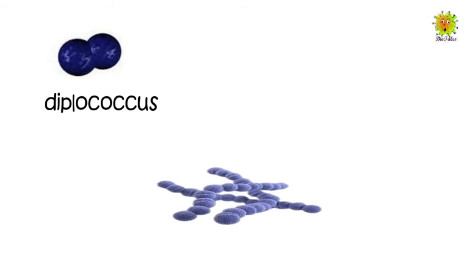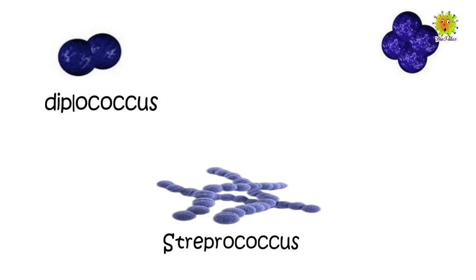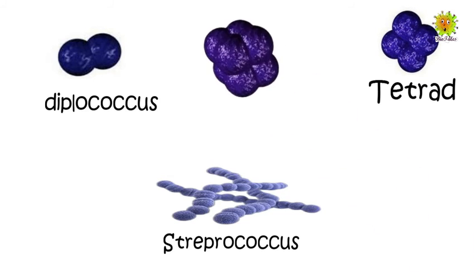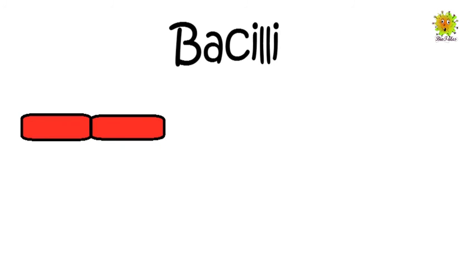Tetrads are square arrangements of four cocci. Sarcina is a cube of eight cocci. The second most common shape is bacilli, which are rod-shaped bacteria. Like coccus, a pair of rod-shaped bacteria is called diplobacillus, and a chain of rod-shaped bacteria is called streptobacillus.